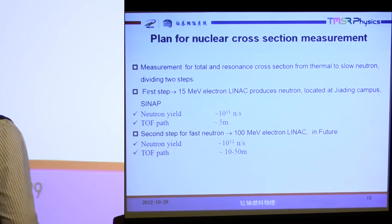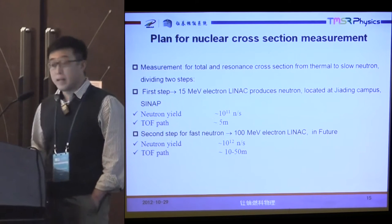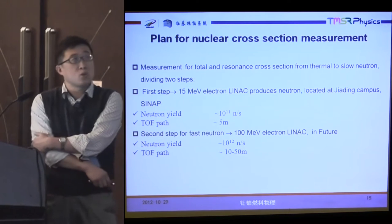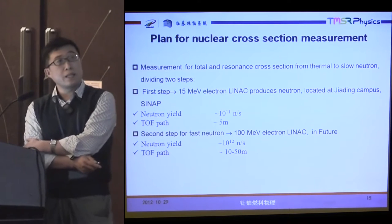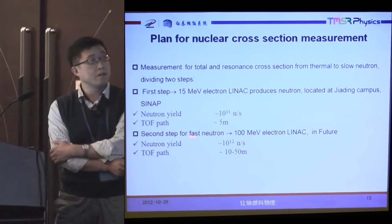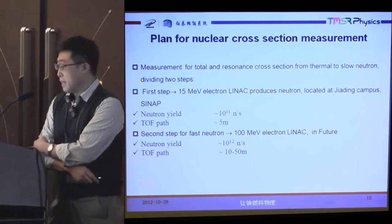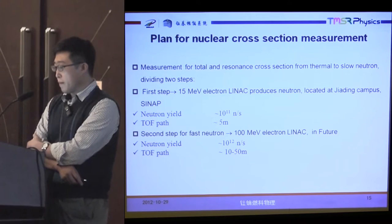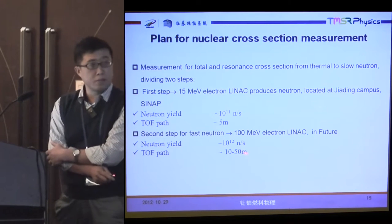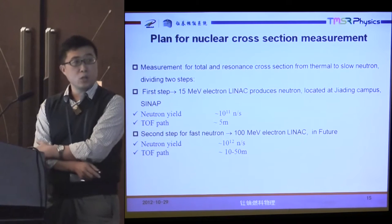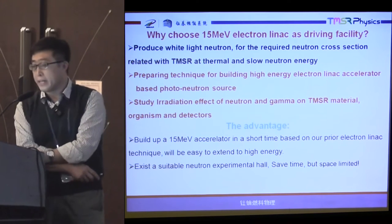Our plan for nuclear cross-section measurement: measurement from thermal to slow neutron energy, dividing into two steps. The first step, we will use a 50 MeV electron linac accelerator to produce neutrons. This facility will be located at Jia-Di-Wan Campus, with a neutron yield of about 10 to the 11 neutrons per second, and a flight path of about 5 meters. The second step, we will have a fast neutron facility with a neutron yield of 10 to the 11 neutrons per second and flight path of 10 to 50 meters.